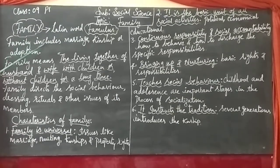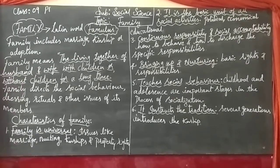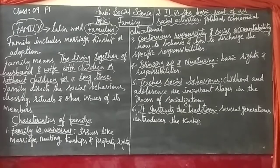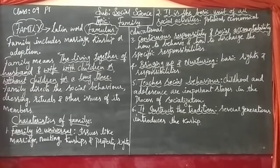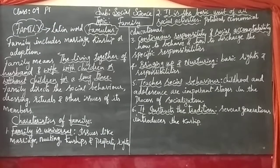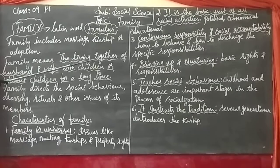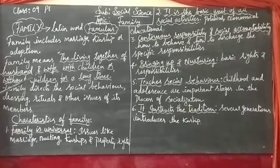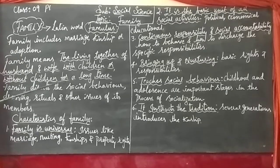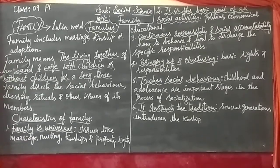Family includes marriage, kinship, or adoption. Kinship in the sense means blood relation. Family means the living together of husband and wife with children or without children for a long time — that is considered as family.